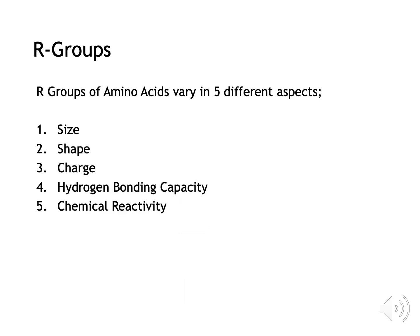R-groups differ in five specific ways: they differ in their size, shape, charge, hydrogen bonding capacity, and chemical reactivity.